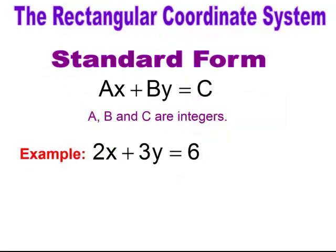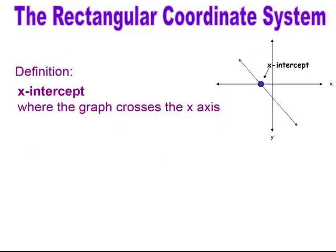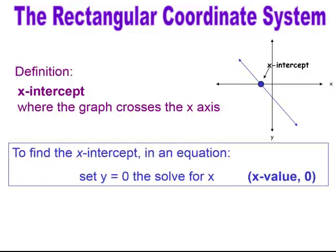When we talk about equations, one type is called standard form. Standard form is when you have X plus Y equals some value C, and the coefficients of X, Y, and C are integers. An example of standard form would be 2X plus 3Y equals 6. The X-intercept is where the graph crosses the X-axis. For any ordered pair on the X-axis, all Y-values equal 0. So to find the X-intercept in an equation, you set Y equal to 0 and solve for X. Your ordered pair will have an X-value and a Y-value of 0.